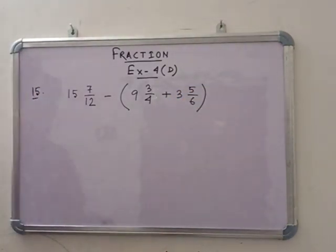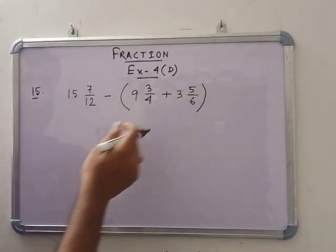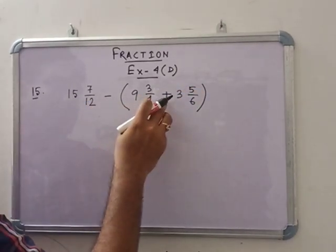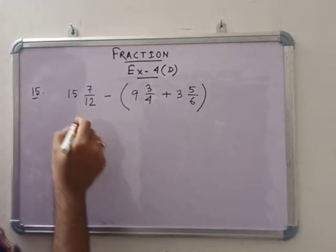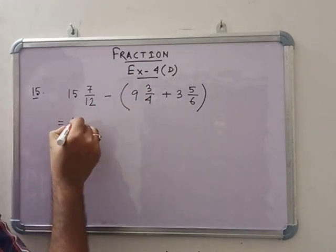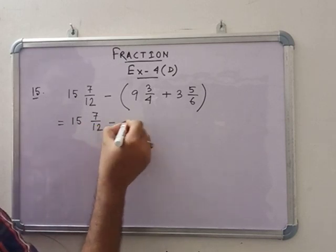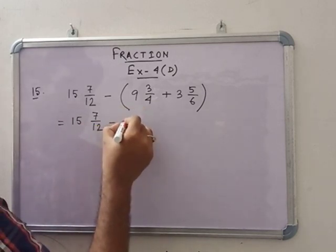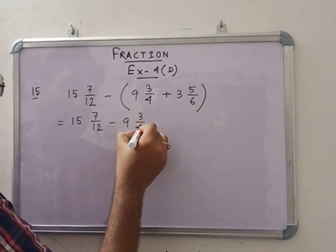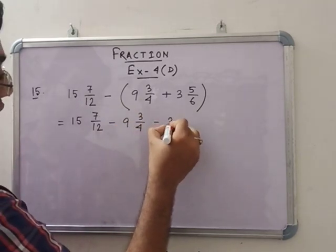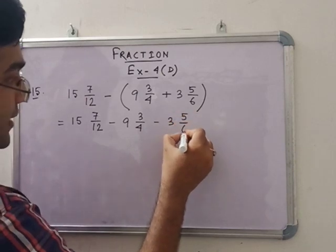Subtract the sum of these two from this. This is the form. Now, if you open the bracket, then minus will be multiplied with these two. Then we can write 15 and 7 by 12 minus 9 and 3 by 4 minus 3 and 5 by 6.